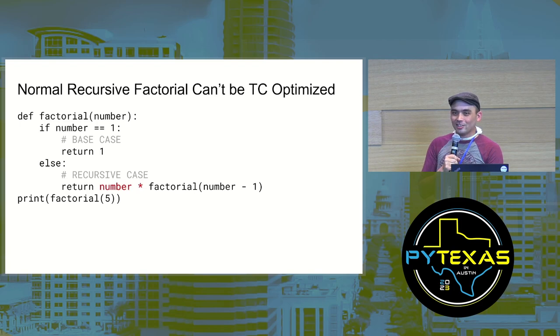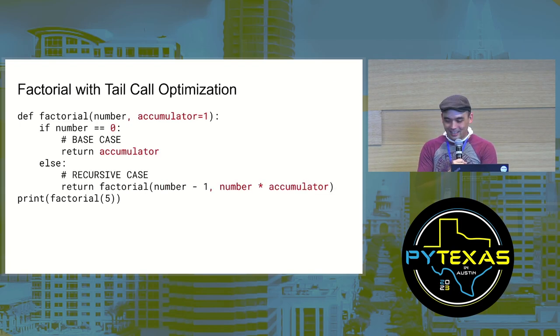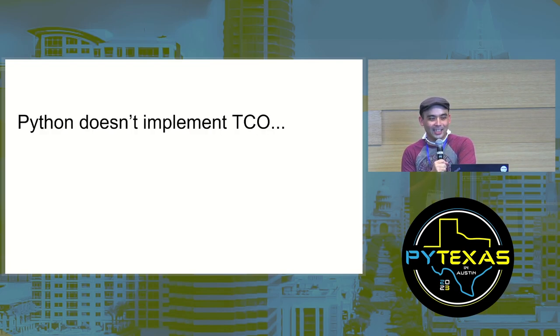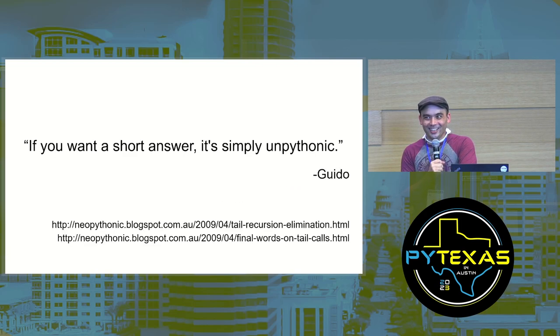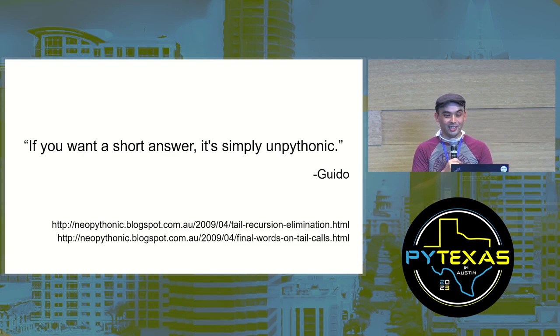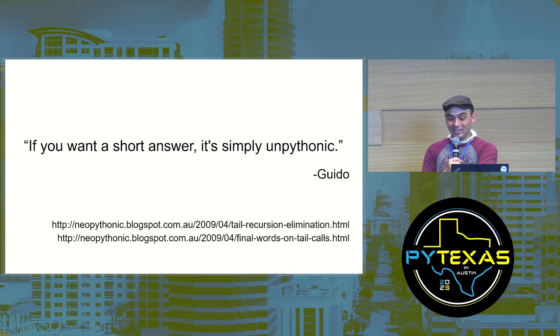But this recursive factorial function can't be tail-call optimized because there's a bit of code that happens after the recursive call. So you have to rewrite your code to use an accumulator and change the base case around — it's getting more and more complicated. And then there's another problem: Python doesn't implement tail call optimization and it never will. Guido van Rossum has blog posts explaining his reasons, and most JavaScript engines and the Java Virtual Machine also don't implement it. So despite factorial being the most popular example of recursion, you never actually want to use recursion to calculate factorials in the real world.